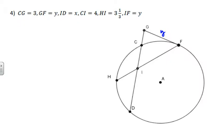You're given that GF is y, and you're going to have to find y. CG is 3. ID is x. CI is 4. HI is 3⅓. And IF is y.